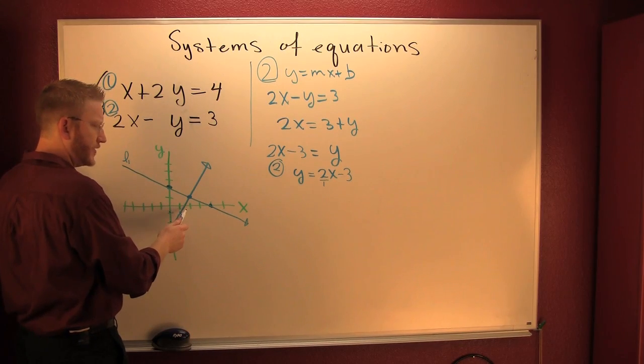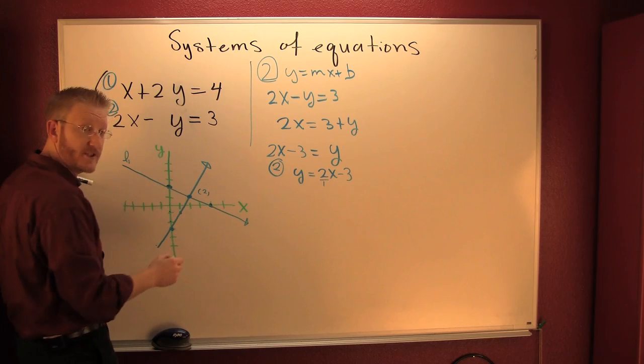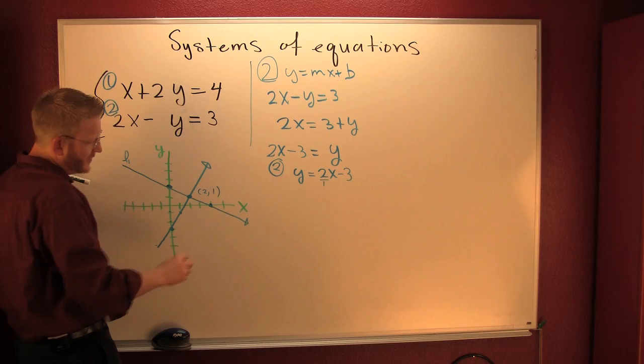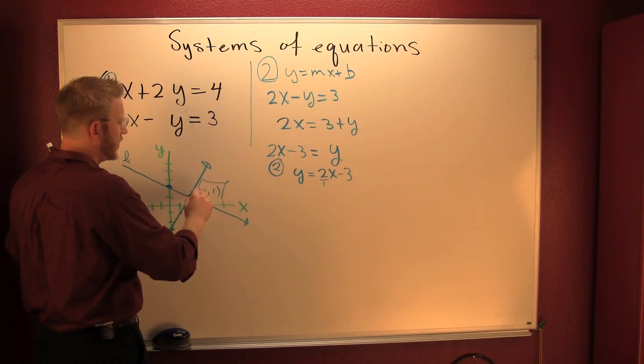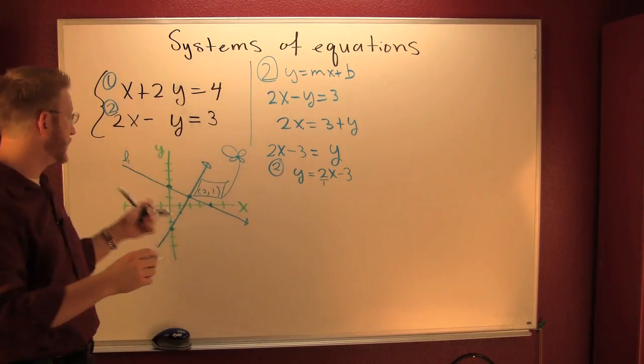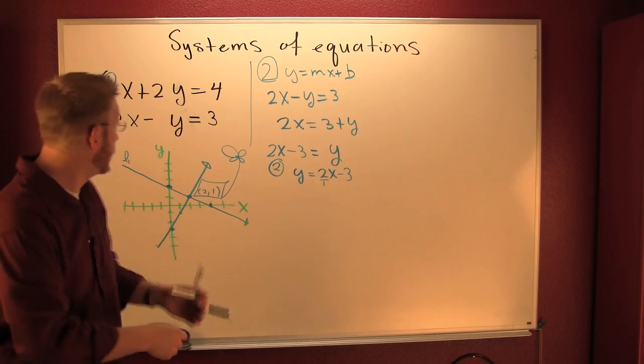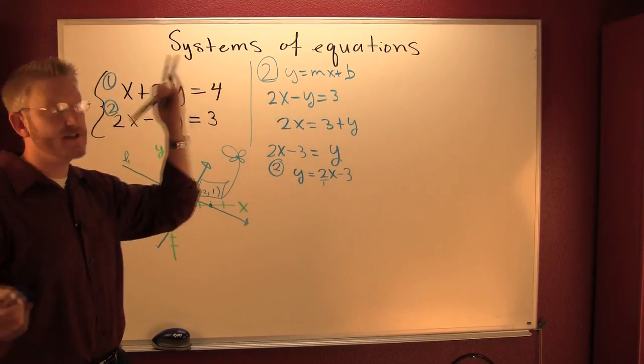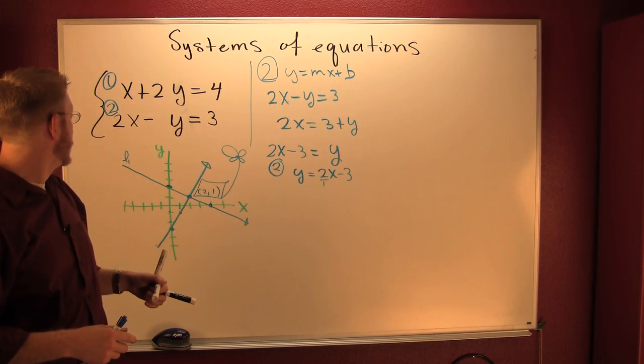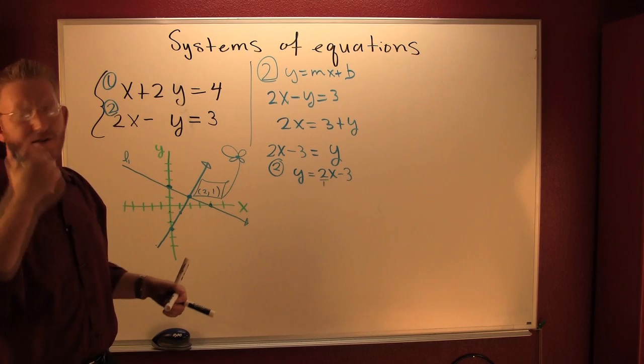But if you were going to guess that point, what would you guess at x be? I'm guessing two. What would you guess at y be? I'm guessing one. And then what? But if you don't believe me, check it. Go on. Throw it back up in there. See if it satisfies both of them at the same time. One, minus one, three. Nice. Two, five. Nice.